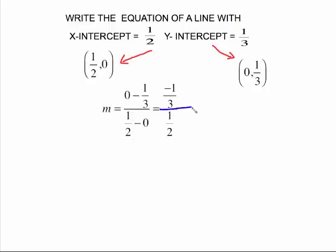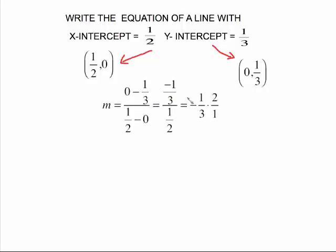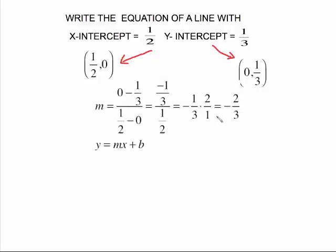Now negative 1 third over 1 half is the same as dividing. So dividing fractions you take this bottom and you flip it upside down and multiply. So negative 1 third times the reciprocal of the bottom is going to give me negative 2 thirds. So same thing there's my slope there's my y-intercept I just have to write y equals the slope which was negative 2 thirds times x plus the y-intercept of 1 third.